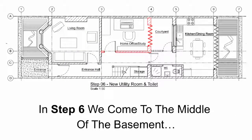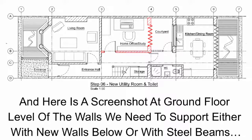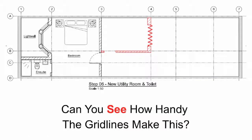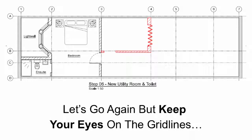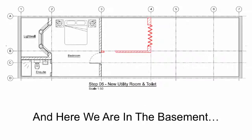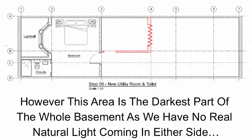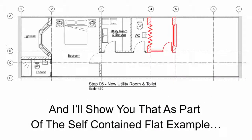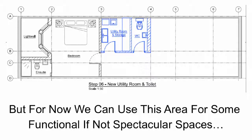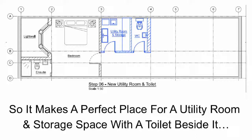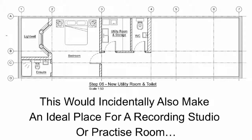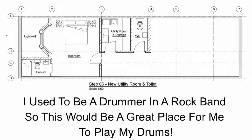In step 6 we come to the middle of the basement. Here is a screenshot at ground floor level of the walls we need to support, either with new walls below or with steel beams, and here they are superimposed into our basement. This area is the darkest part of the whole basement as we have no real natural light coming in from either side. We can use this area for functional spaces — it makes a perfect place for a utility room and storage space with a toilet beside it, and would also make the ideal place for a recording studio or practice room.